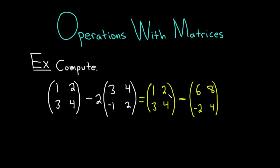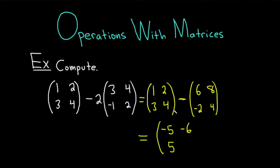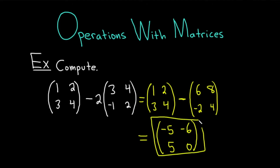Now we just subtract each entry. So it'll be 1 minus 6, that's minus 5. Then 2 minus 8, that's minus 6. Then 3 minus negative 2, which is really 3 plus 2, that's 5. And then 4 minus 4, so you get 0. And so this would be the answer to this particular computation.